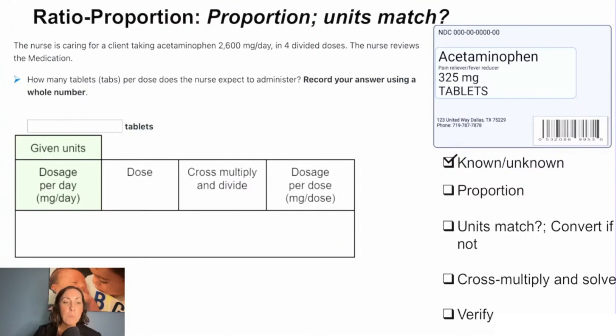We've already worked this problem. We know all our knowns and our unknowns, so we're going to plan out our steps. When I plan out the steps for ratio proportion, it just helps me see it all, and hopefully that helps you guys too.